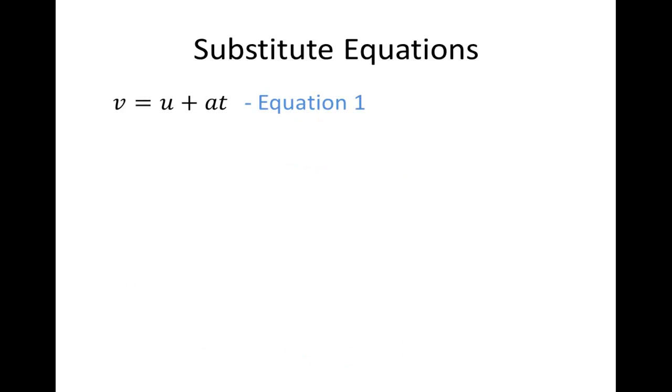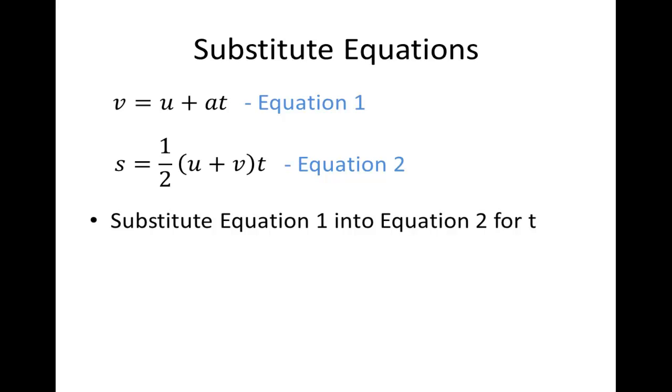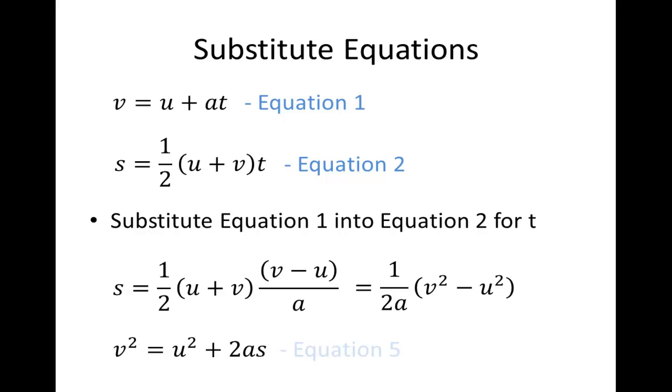And then finally, what we do is we substitute equation 1 into equation 2 for T, where T is equal to V minus U over A. And we get the relationship of V squared is equal to U squared plus 2AS. Our final equation of motion, equation 5.